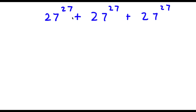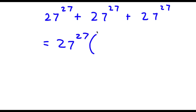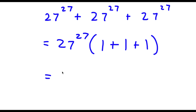Alright, so I have 27 to the power of 27 plus 27 to the power of 27 plus 27 to the power of 27. I'm going to start by factoring out 27 to the power of 27. Now 27 divided by 27 is simply equal to 1, so I have 27 to the power of 27 times 1 plus 1 plus 1, which equals 3.